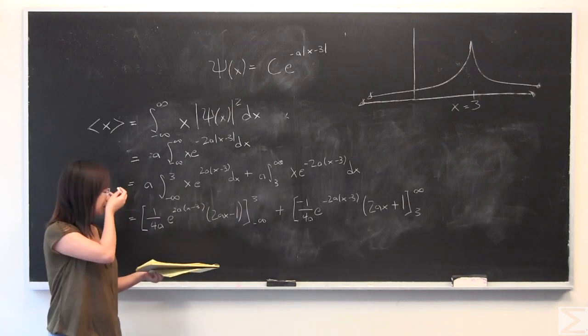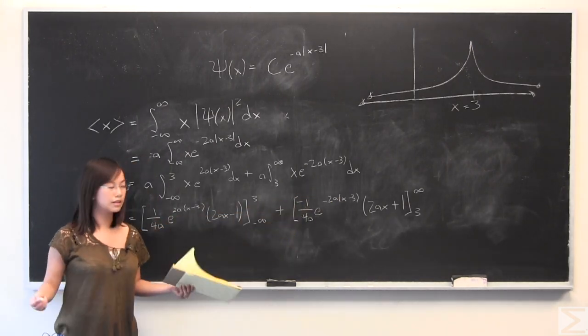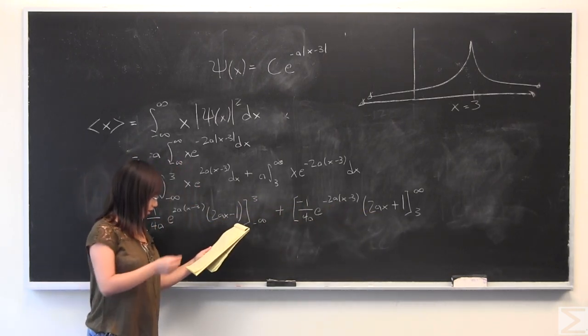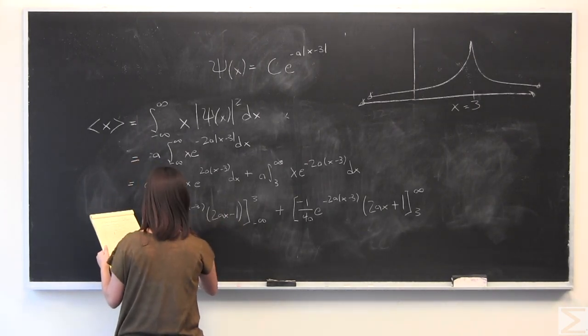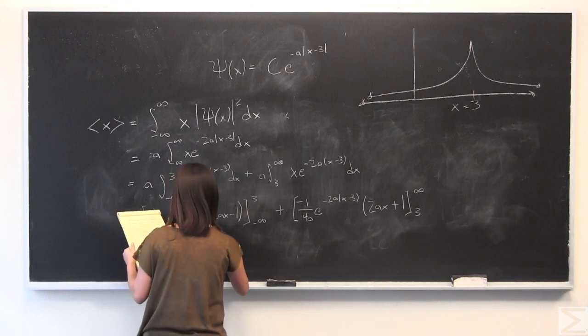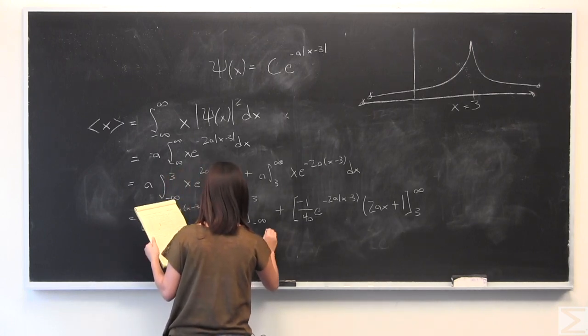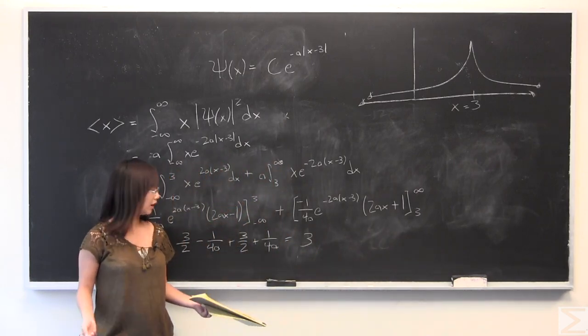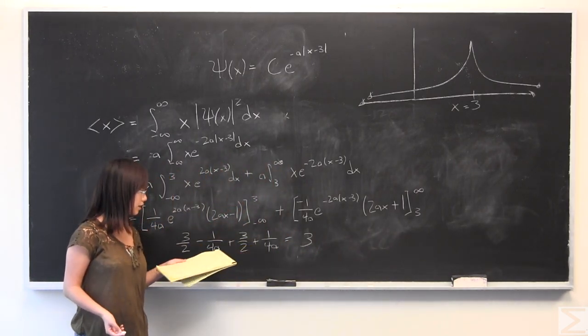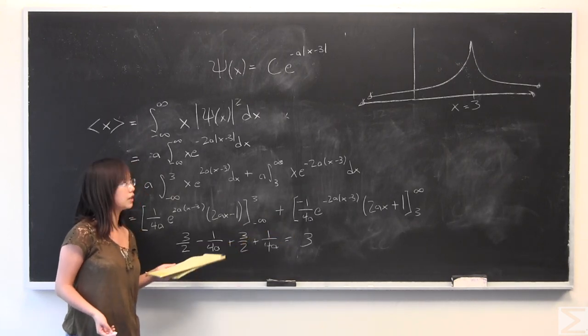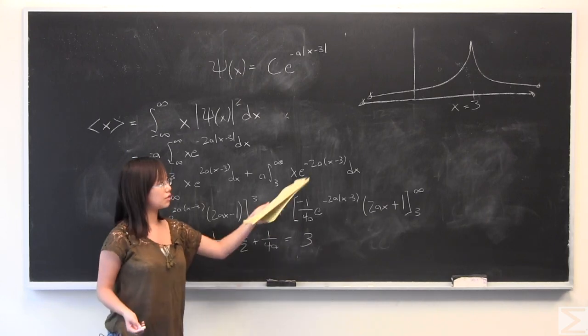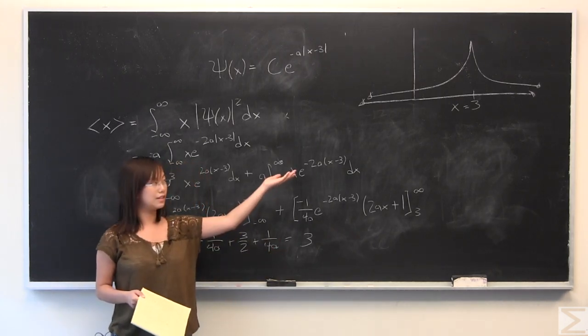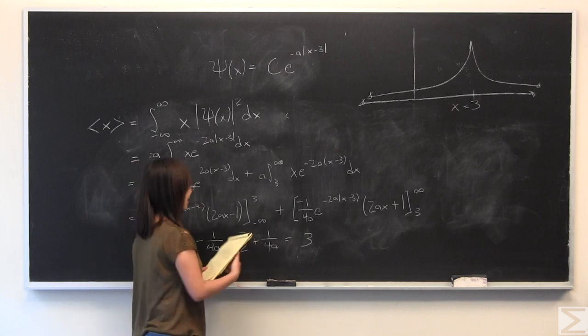And again, we see that, just like we want, at negative infinity, at positive infinity, it disappears. We only have to evaluate it at 3 here and 3 there for each respective part. And, lo and behold, we get this expression, and this is equal to 3, which is exactly what you want. And another thing important to note is that, no matter what the value of a is, a will drop out here and here. So it doesn't matter what it is. It's still centered at x is equal to 3. You're still going to get an expectation at x equal to 3, which is exactly what we want, which is exactly what we expect. It's good when math matches what you want to see.